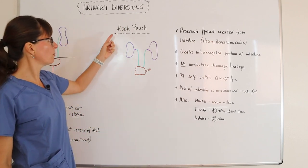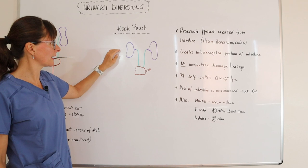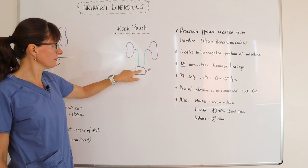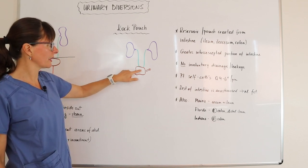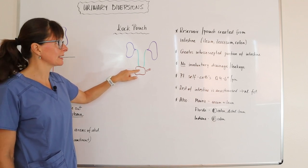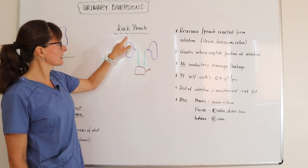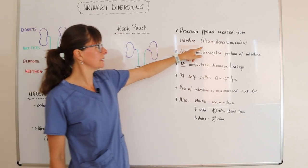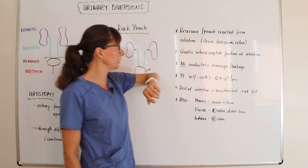For the Coke pouch, we have again the kidneys and the ureters, and then instead of the bladder, we have a reservoir or pouch that's created from the intestine. In the case of a Coke pouch, it can be from the ileum, the ileocecum, or the colon.